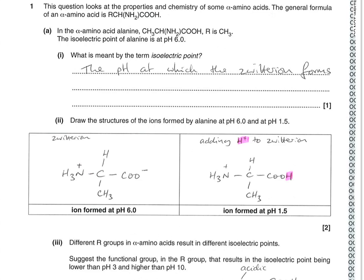The next part asks you to draw two structures of the ions formed at pH 6 and pH 1.5. The pH 6 ion is going to be the zwitterion because that is the isoelectric point of alanine. What happens is the H+ from the COOH group is donated to the nitrogen of the NH2 group, so we get an NH3+ group and a COO- group.